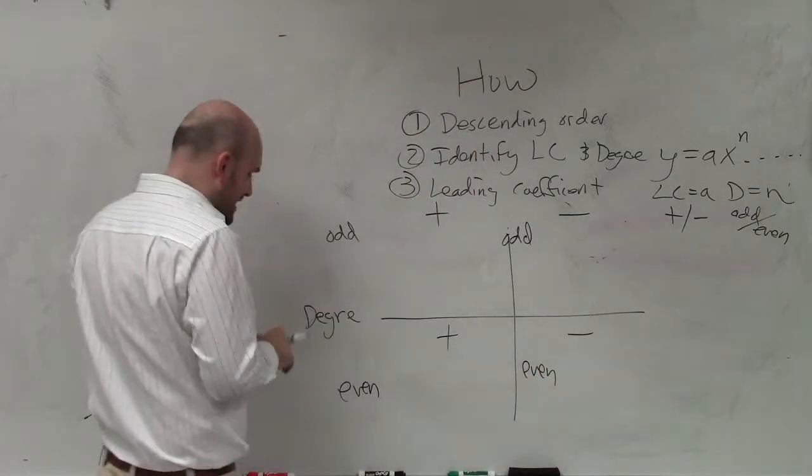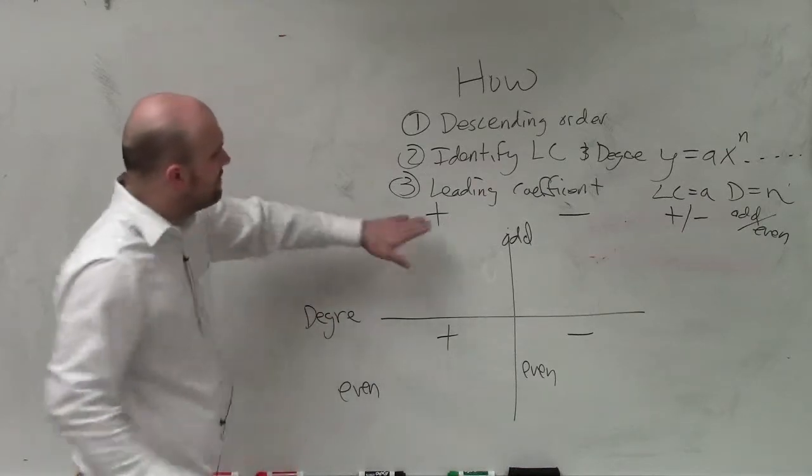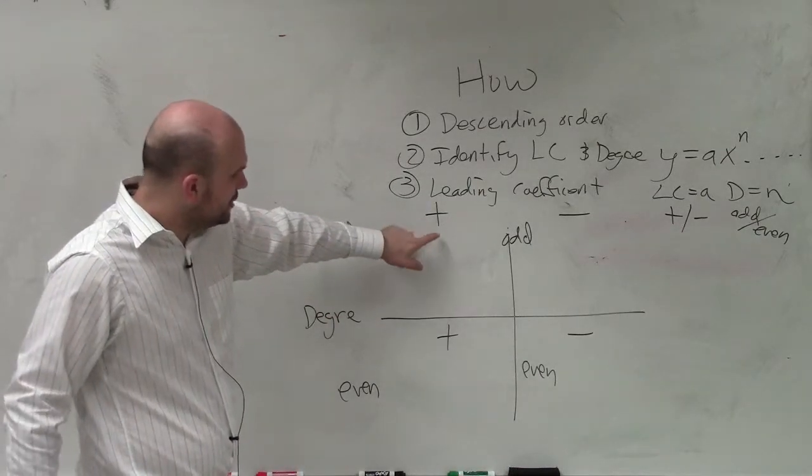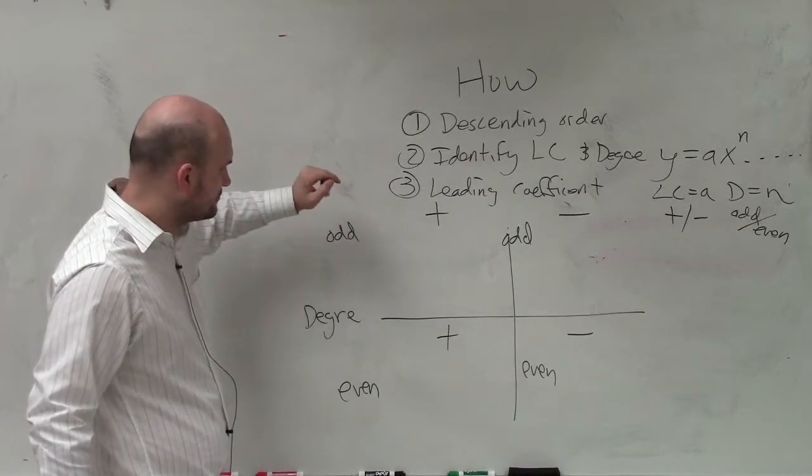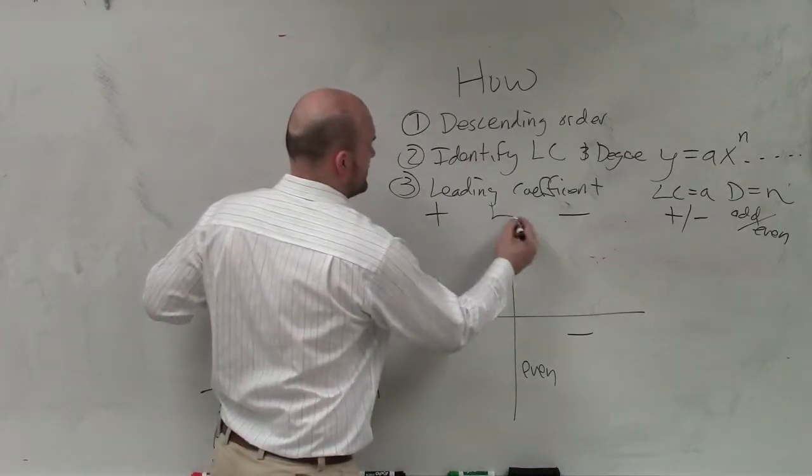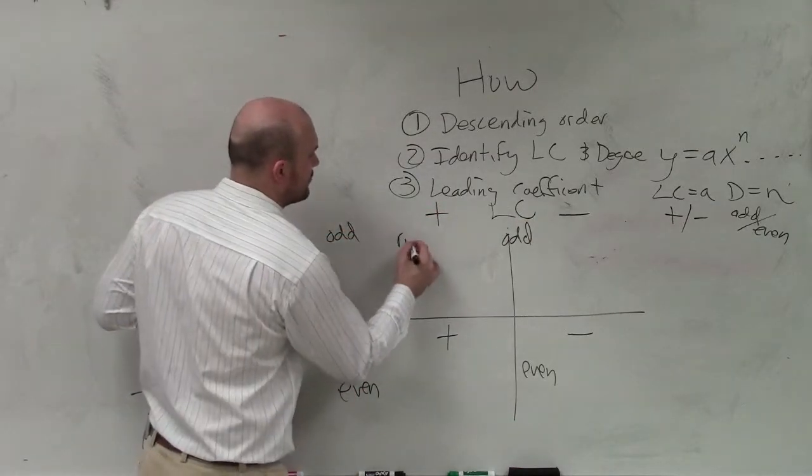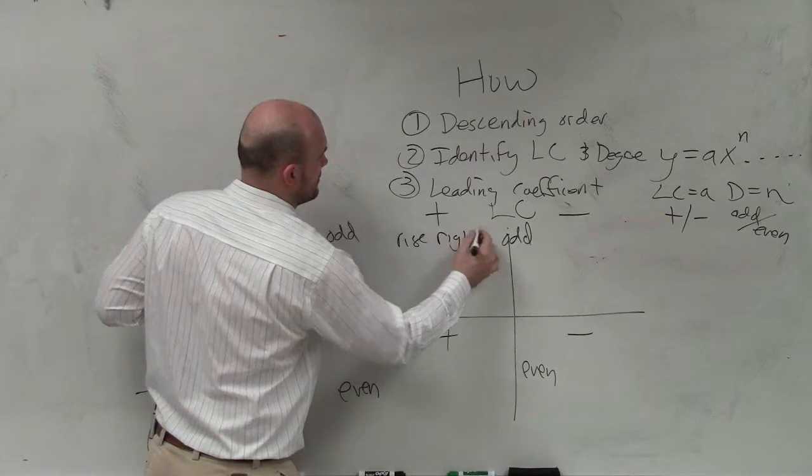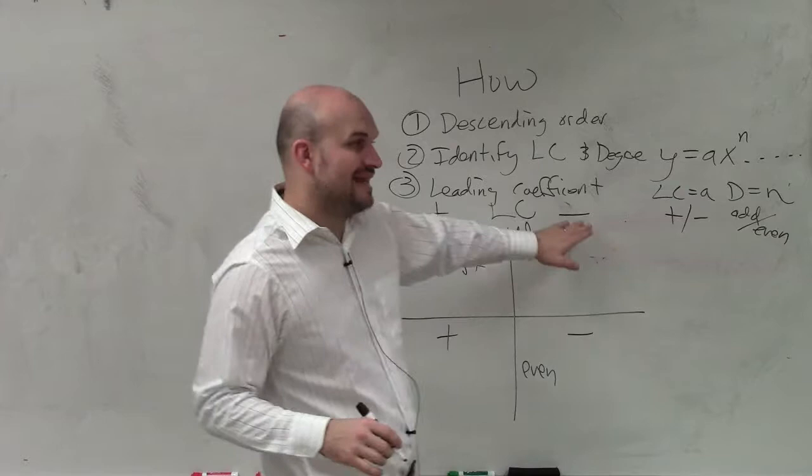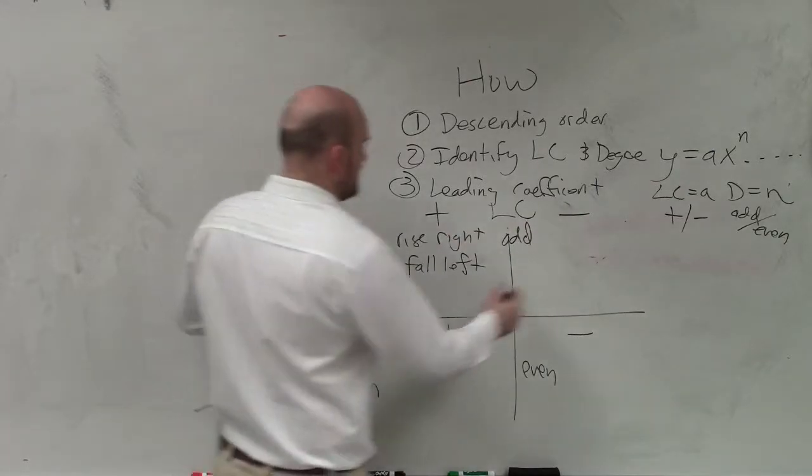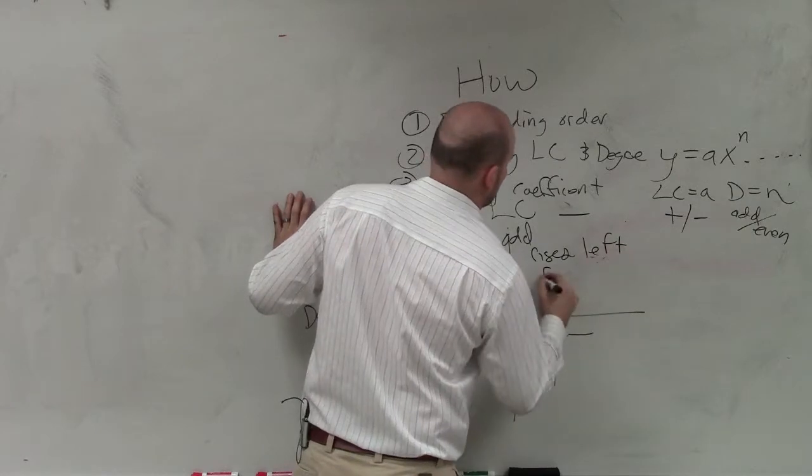When we have a positive leading coefficient and odd degree, it's going to rise right, fall left. If our leading coefficient is negative but it's odd, then it rises left, falls right.